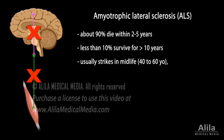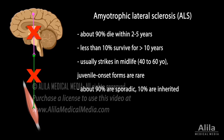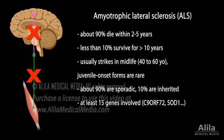ALS usually strikes in midlife, but it can occur in people of any age. Most ALS cases are sporadic. Only about 10% are inherited, with at least a dozen genes involved.